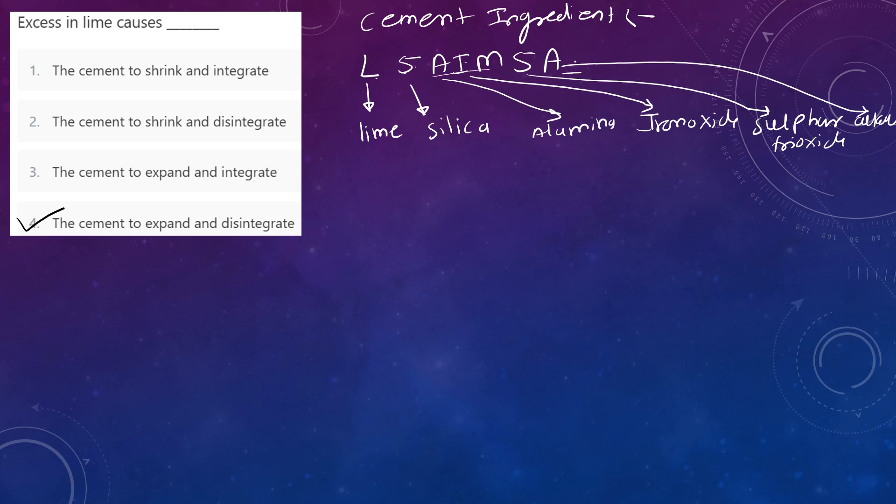Lime, silica, alumina, iron oxide, sulfur trioxide, and alkali. Lime is written as CaO, silica is SiO2, alumina is Al2O3, iron oxide is Fe2O3, sulfur trioxide is SO3. Alkalis are N2O and K2O—sodium and potassium.